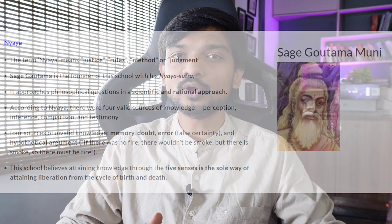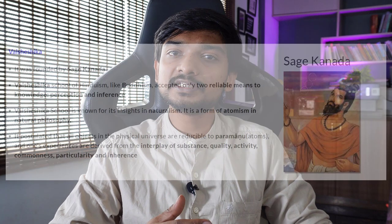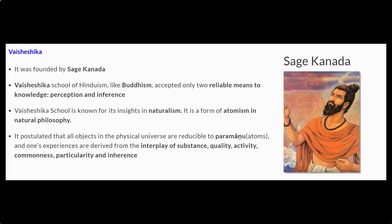I am not going very deep into each of these philosophies because each is a separate topic on its own — I am just giving an overview. Then comes Vaisheshika, which is very similar and closely related to Nyaya philosophy, but accepts only two Pramanas: direct perception and inference. Sage Kanada was the founder of the Vaisheshika philosophy.